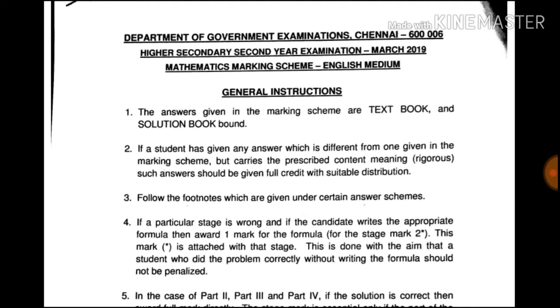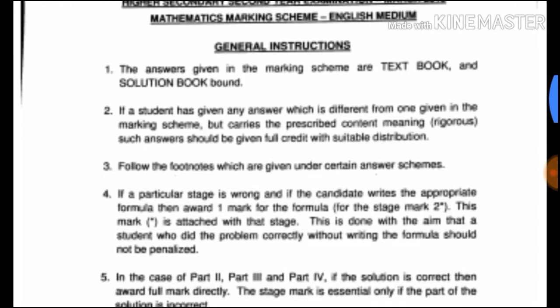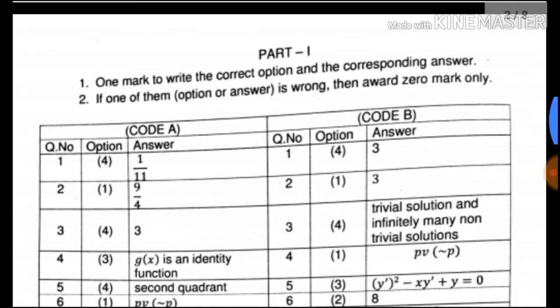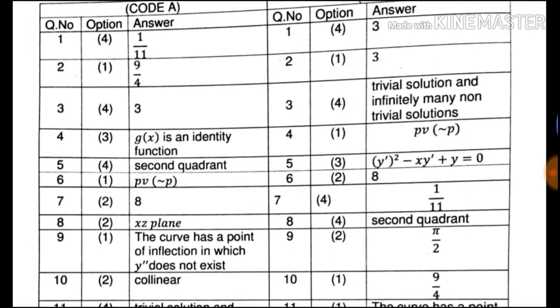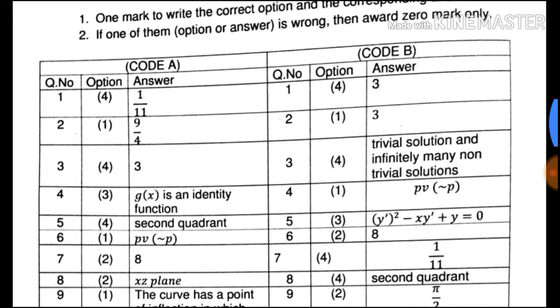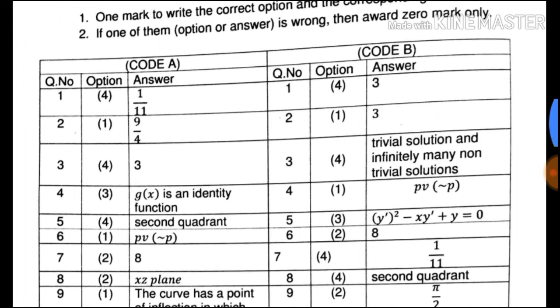It will show the government answer key. See that they have the first to the 20th question which is Type B. This is the E-Type and the B-Type.